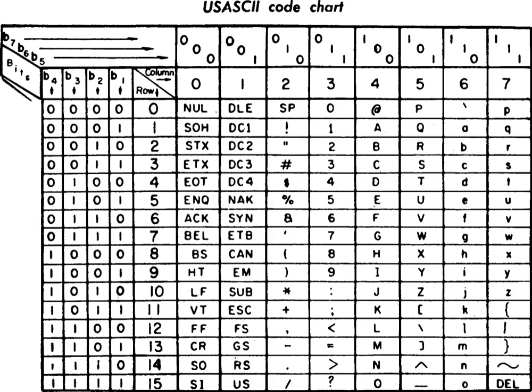ASCII was developed from telegraph code. Its first commercial use was as a 7-bit teleprinter code promoted by Bell Data Services. Work on the ASCII standard began on October 6, 1960, with the first meeting of the American Standards Association — now the American National Standards Institute, or ANSI. The first edition of the standard was published in 1963, underwent a major revision during 1967, and experienced its most recent update during 1986.